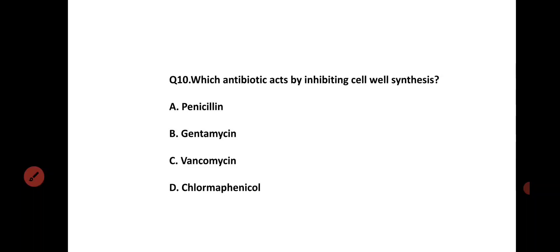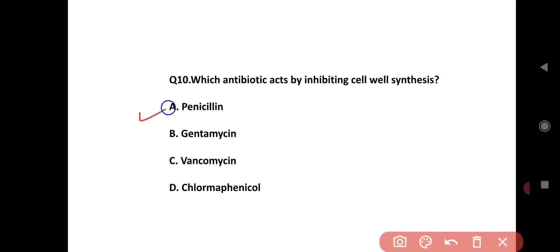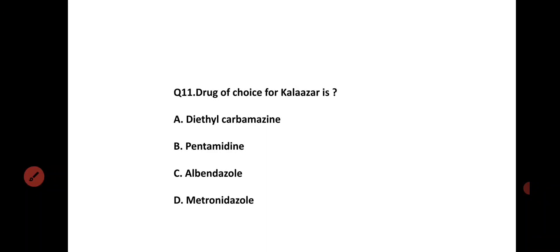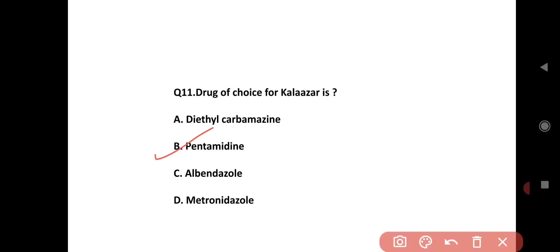Which antibiotic acts by inhibiting cell wall synthesis? Option A is penicillin, Option B is gentamycin, Option C is vancomycin, Option D is metronidazole. The correct answer is penicillin and vancomycin.